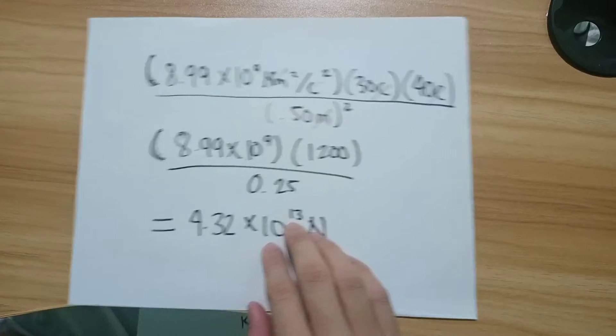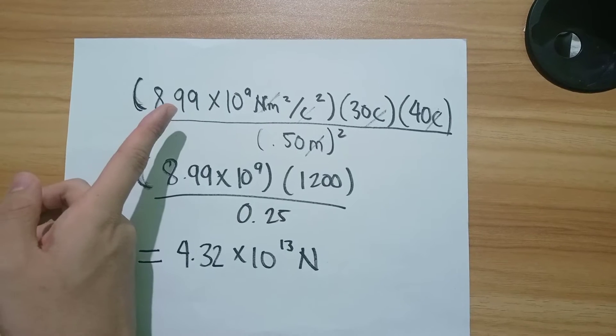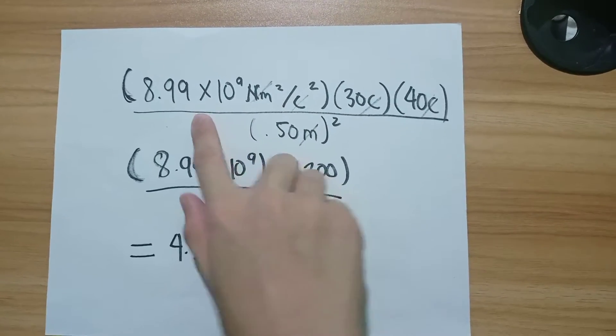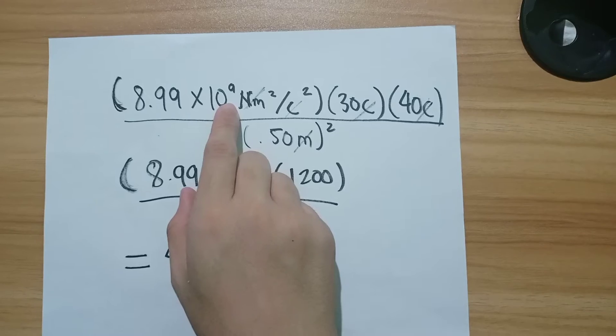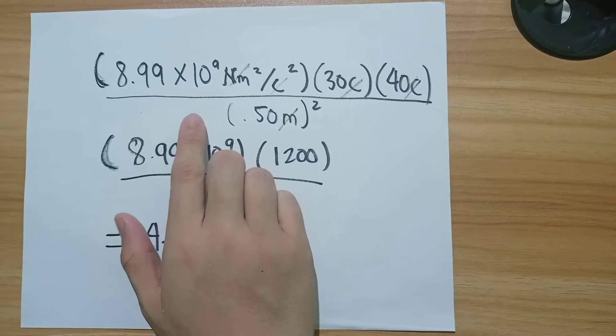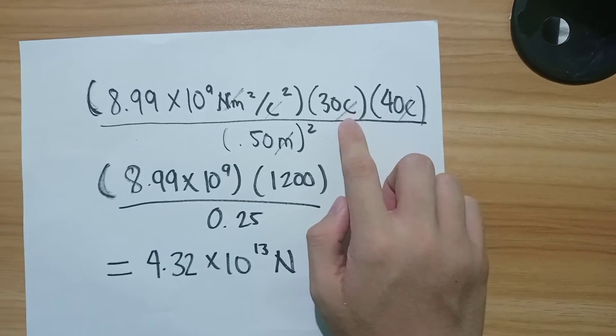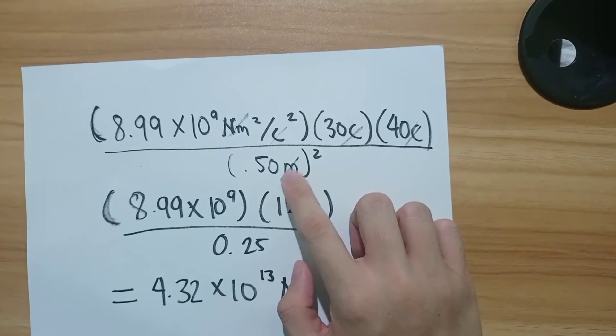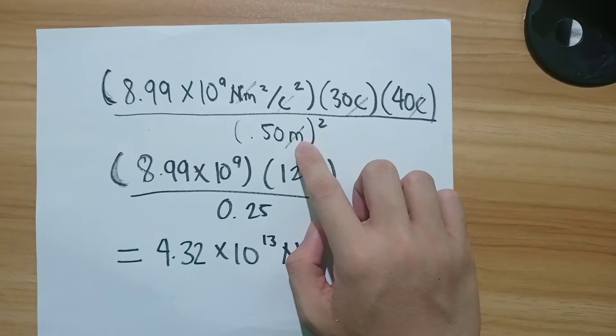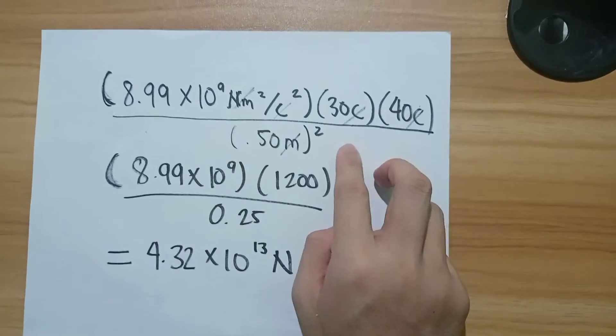This is the equation of Coulomb's law. This is 8.99 times 10 to the power of 9 Newton meter squared, which represents the K, the Coulomb's constant. And these two, 30C and 40C, are the two product charges, with the bottom being the radius which represents the distance.